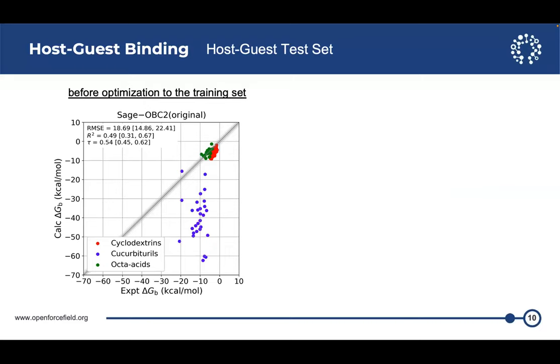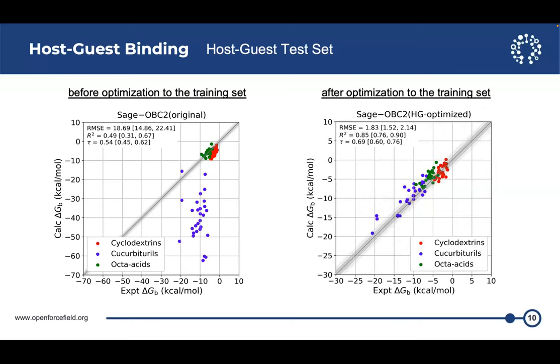For the test set, we see the same thing with the original radii. We see an overestimation of the binding free energy for cucurbiturals. Now when we use the host guest optimized radii from the previous slide, we get a much better result. The RMSE dropped to about 1.8 kcal per mole, and the R squared increased to about 0.85. So what we see is that the optimized radii performed better on a test set than on a training set.